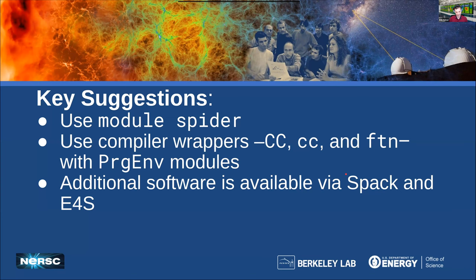To summarize: for modules, use 'module spider' to search — you'll never forget 'module load' and 'module unload'. For compilation, use the compiler wrappers CC, cc, ftn, especially in conjunction with programming environment modules. A lot of times when I get tickets about code not compiling, switching to the compiler wrappers fixes it. We also have additional software available through SPACK and E4S, which can be very helpful.